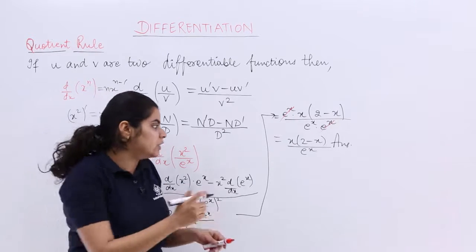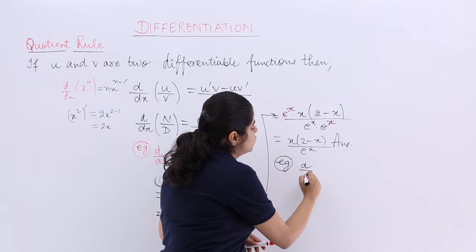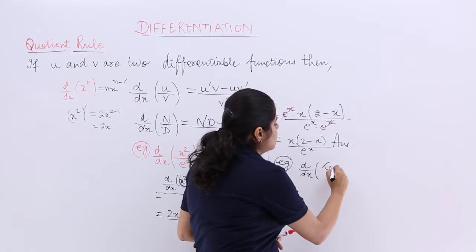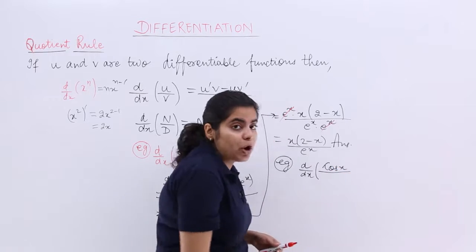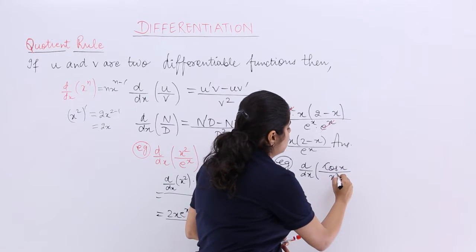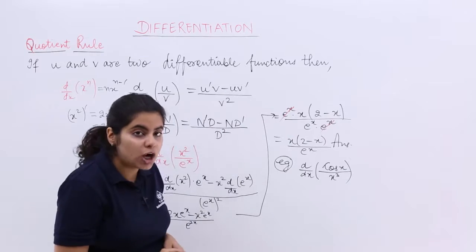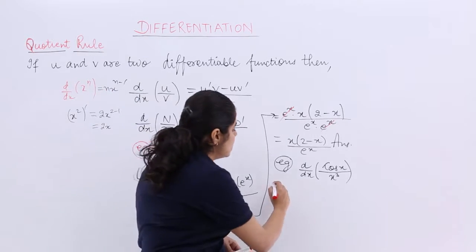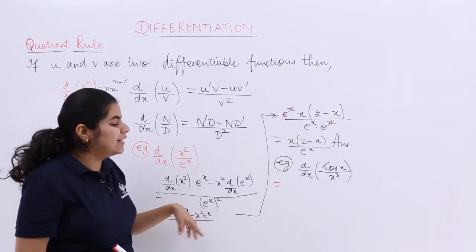Let's see another numerical problem. I say I have this time d by dx of anything can be there, say cos x upon x cube. So cos x upon x cube. Earlier we had x square upon e raised to the power x. Let's not write it in an elaborate manner.